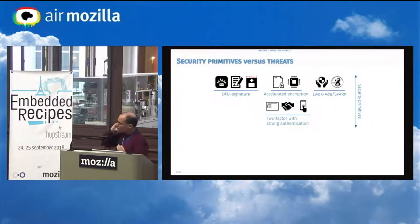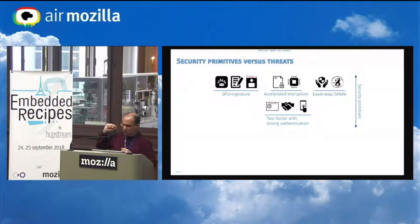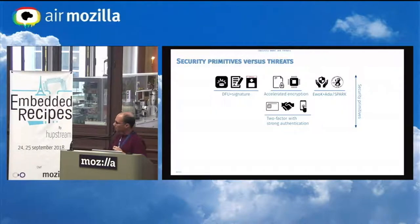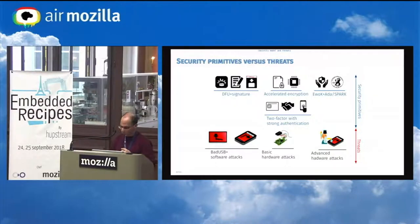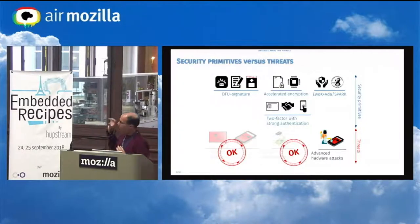We also provide a dedicated SDK based on the kernel configuration framework, allowing support for multiple SoCs and boards and customization of the firmware for different boards — with hardware limitations for boards that do not support cryptographic acceleration, for example. To summarize what we bring with our platform: device firmware update and signature primitives with accelerated encryption, a micro-kernel for application isolation, two-factor strong authentication, and these security primitives together address many of the threats presented previously. Only some very advanced hardware attacks remain.